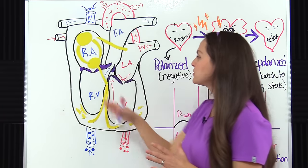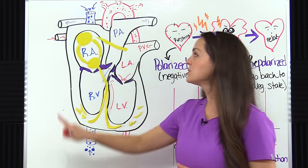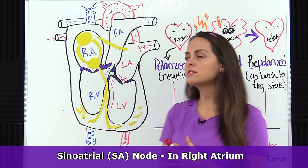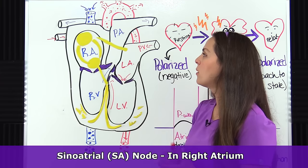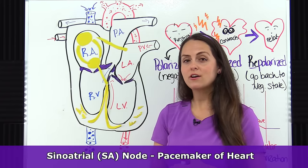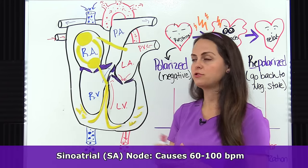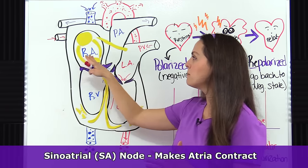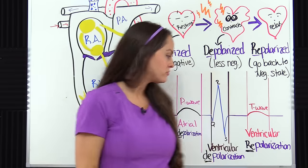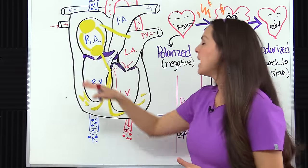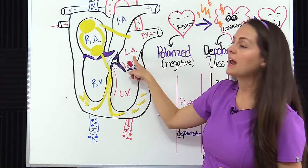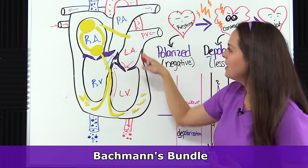Now let's look at the specific parts of the electrical conduction system. Normally everything should start here in the SA node, which stands for sinoatrial node. It's located in the upper part of the right atrium, and we refer to this as the pacemaker of the heart because it causes your heart to beat at a rate of 60 to 100. The SA node is responsible for making the atria contract - when it fires, it causes atrial depolarization. The electrical signals leave here, travel through the internodal pathways, and can get to the left atrium via Bachmann's bundle, then go down and hit the AV node.